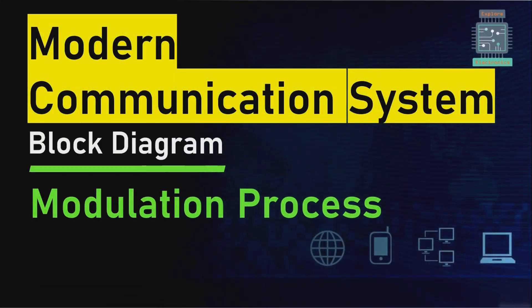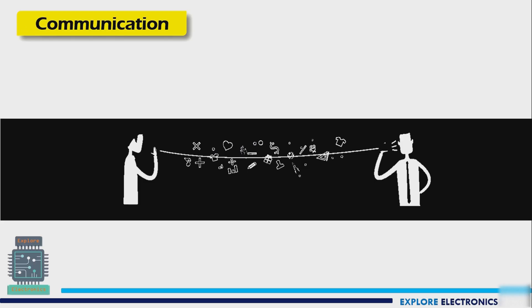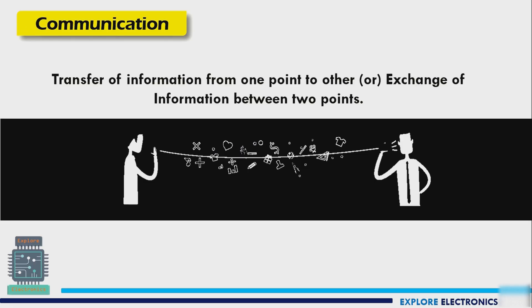Hello everyone, welcome back to Explore Electronics. In this video let us see modern communication systems, its block diagram, and also the modulation process. Communication is a transfer of information from one point to another point where we exchange some information between the two points.